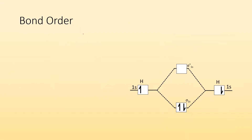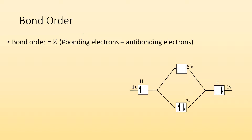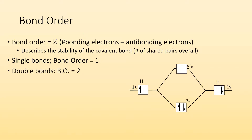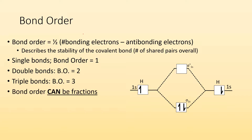New concept: bond order. The equation is one half times the number of bonding electrons minus the number of anti-bonding electrons. This describes the stability of the covalent bond — basically how many shared pairs of electrons we have. Single bonds have a bond order of one, double bonds have a bond order of two, and triple bonds have a bond order of three. Special note: bond orders can be fractions, like one and a half. That is totally possible.